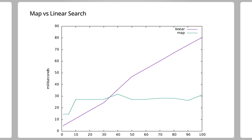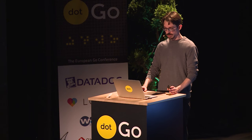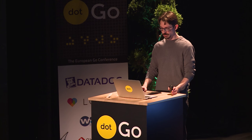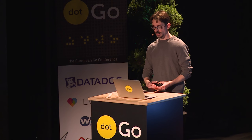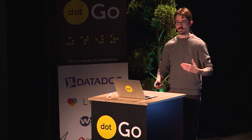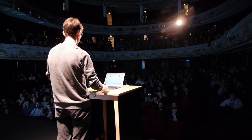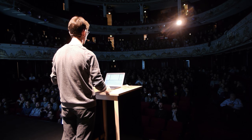I've benchmarked this for you, and here's the graph. From a performance perspective, the cutoff is at about 30 elements. Before that, a slice is faster. That just means that the constant associated with accessing a map element is more expensive.